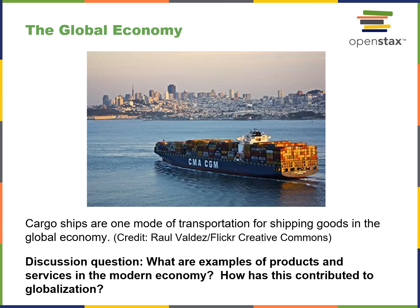The global economy is made up of countries that focus their energies on where they can do best in terms of production, then trade with other nations for things other countries can create at a lower cost. The discussion question is: what are examples of products and services in the modern economy that transfer between nations, and how has this contributed to globalization? The shipping industry is an obvious example — ships with containers, rail, and airlines are all part of the globalization process.